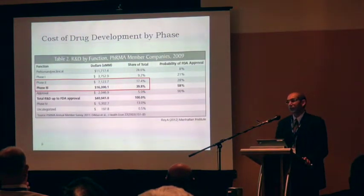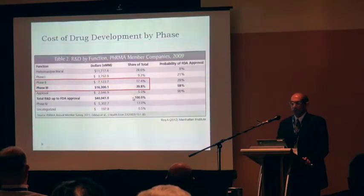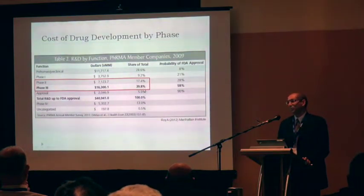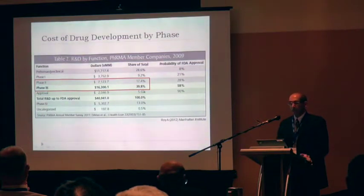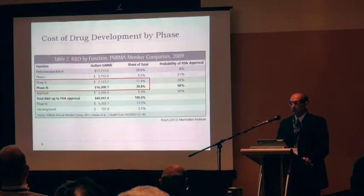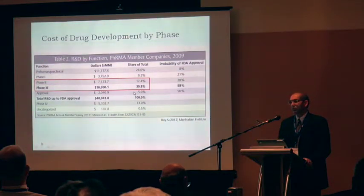This boils down to how much it's costing. Based on numbers from 2009, the vast majority — about 40% — of costs are incurred in phase three, and this is representative in oncology as well. If you combine the phase two and phase three share of total costs, it's over 50%.